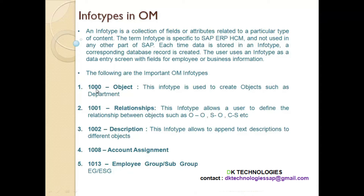Info type 1000, named 'Object', is used to create objects such as departments. So info type 1000 is used to create organizational units, which are nothing but departments or groups.